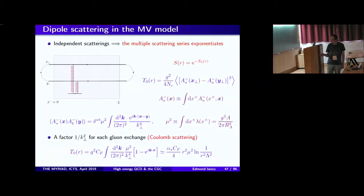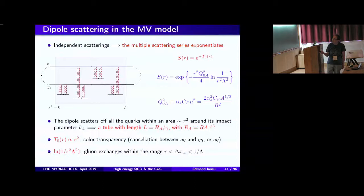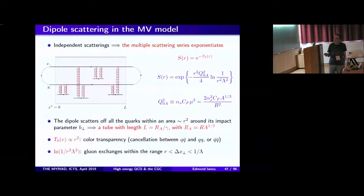That's the scattering amplitude in the single scattering or two-gluon exchange approximation, essentially the same as the standard gluon distribution of the target nucleus. Now I simply exponentiate it to obtain the S-matrix for multiple scattering to all orders. I rewrite it in a slightly different way and put in the exponent. The new scale Q0-squared has dimension of momentum squared: it's alpha-s times C_F times the previous scale mu-squared.